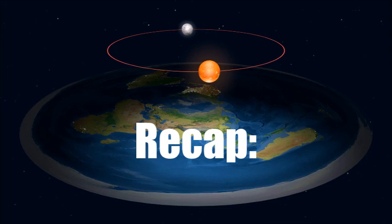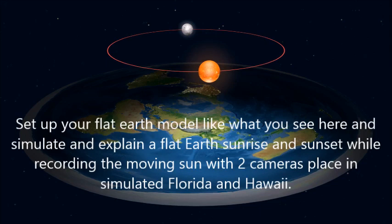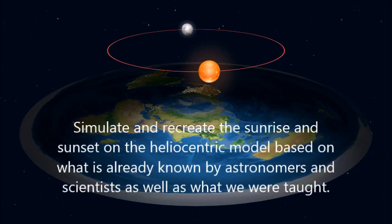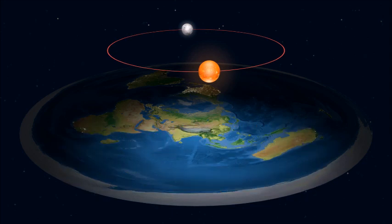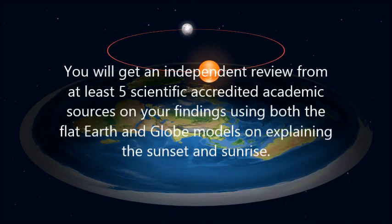Here's a recap: set up your flat earth model like what you see here and simulate and explain a flat earth sunrise and sunset, while recording the moving Sun with two cameras placed in simulated Florida and Hawaii on your flat earth model. Simulate and recreate the sunrise and sunset on the heliocentric model based on what is already known by astronomers and scientists and what we were taught. You will get an independent review from at least five accredited academic sources on your findings using both the flat earth model and the globe earth model.